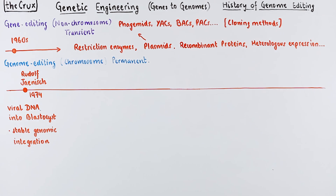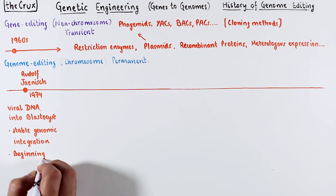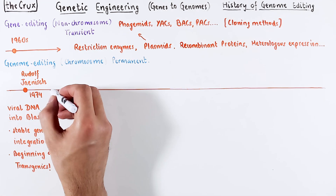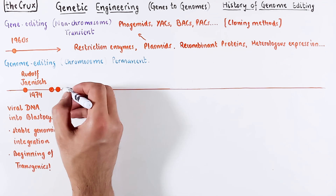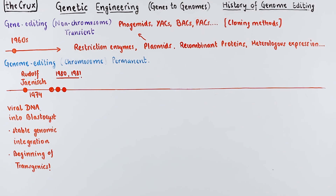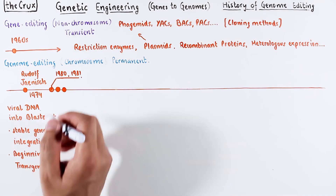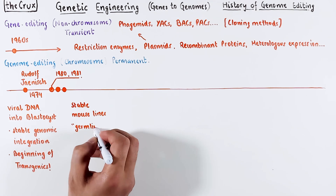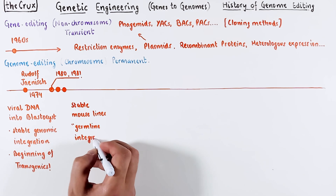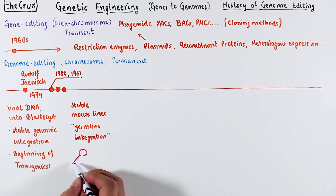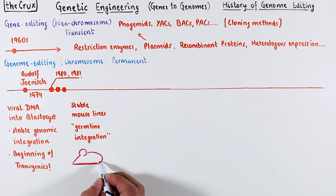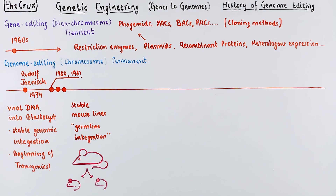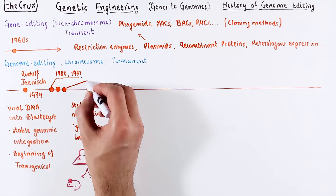This was stable and permanent, and this curious experiment started the field of transgenics. Rudolf Jaenisch and a few others later developed stable mouse lines where the artificially supplied DNA transmitted through germlines into the next generation. So now, instead of one mouse, you can have a colony of mice containing this synthetically supplied DNA.